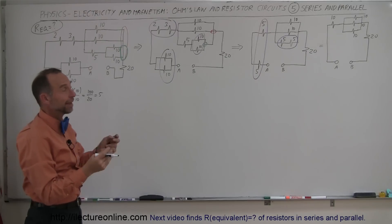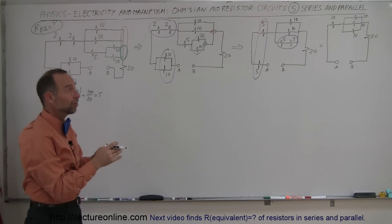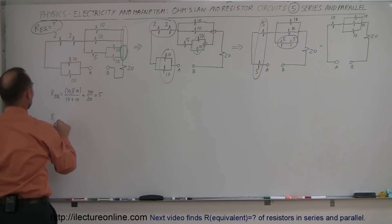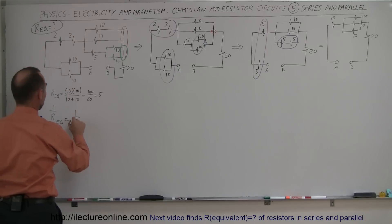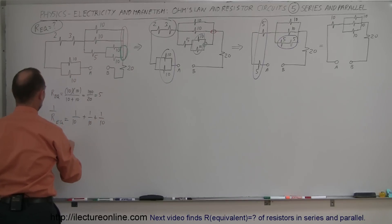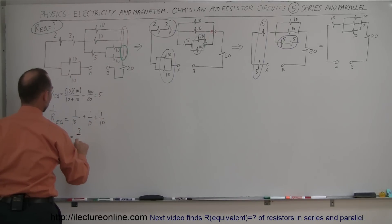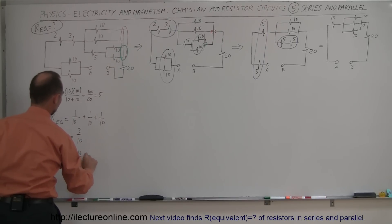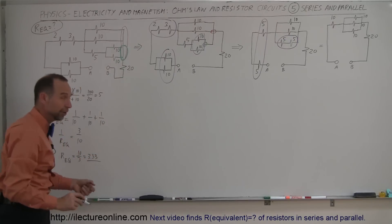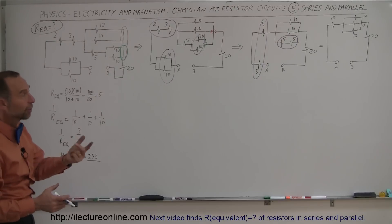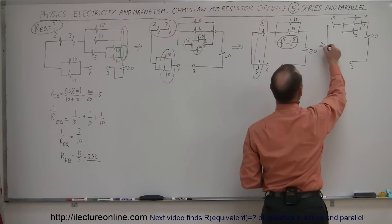When you have three resistors in parallel with the same value, the equivalent resistance will be one-third that value. If you're not sure, we can compute it: 1 over R-equivalent equals 1 over the first plus 1 over the second plus 1 over the third, so 1 over R-equivalent equals 3 over 10, which means R-equivalent equals 10 divided by 3, which is 3.33 ohms — one-third the value of each one.